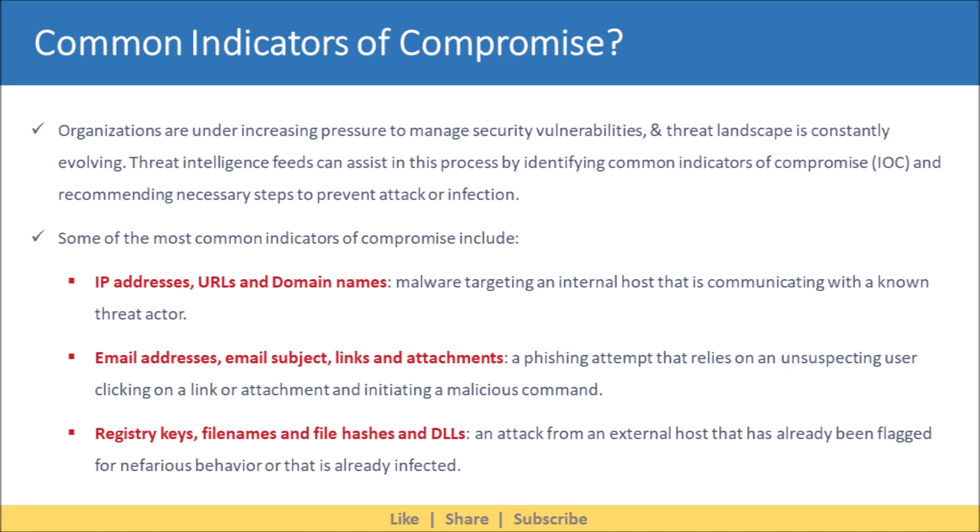Let's see what are the common indicators of compromise. Organizations are under increasing pressure to manage security vulnerabilities, and the threat landscape is constantly evolving. Threat intelligence feeds can assist in this process by identifying common indicators of compromise and recommending necessary steps to prevent attack or infection. Some of the most common indicators of compromise include IP addresses, URLs, and domain names. An example would be malware targeting an internal host that is communicating with a known threat actor.